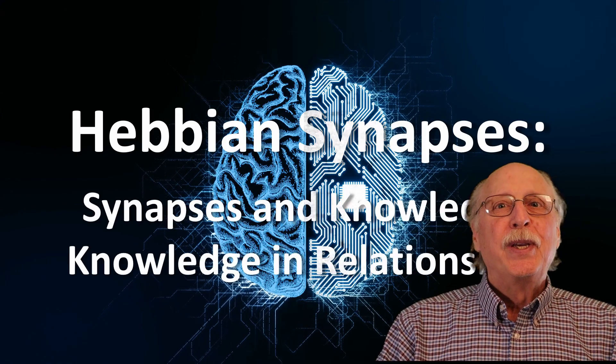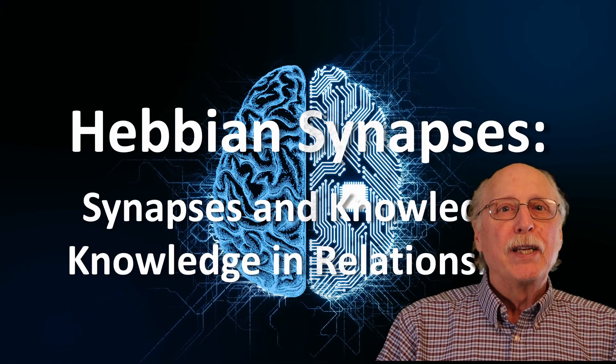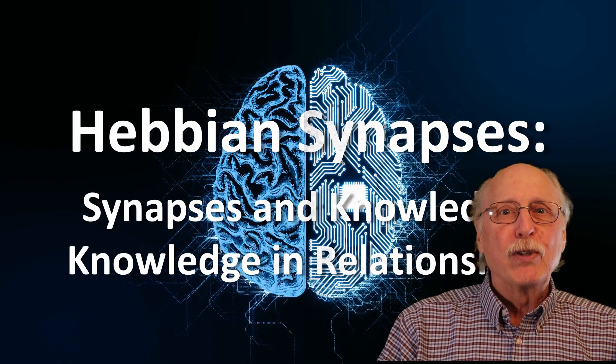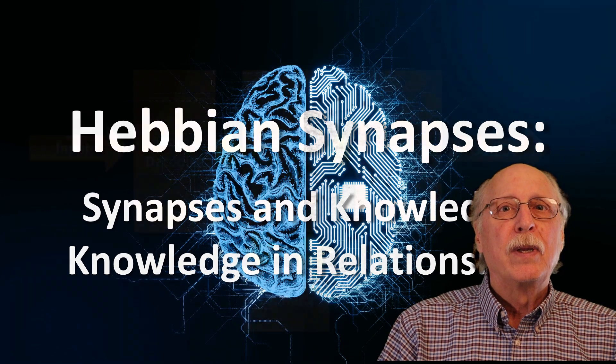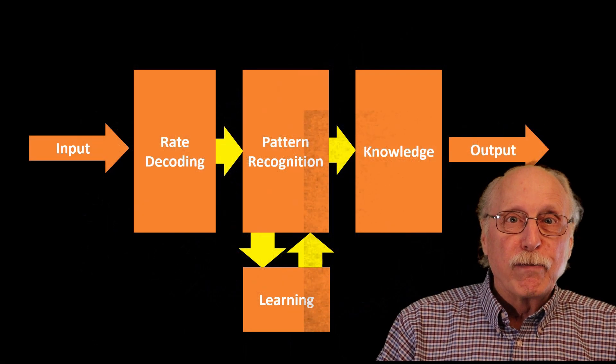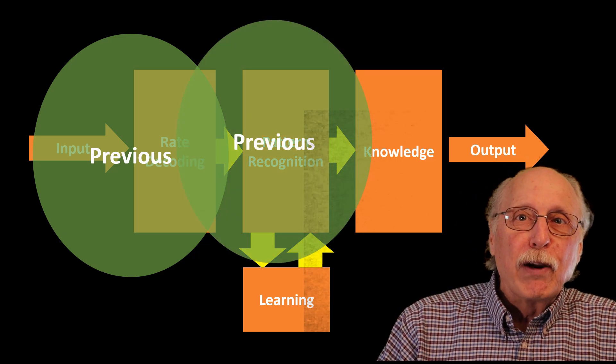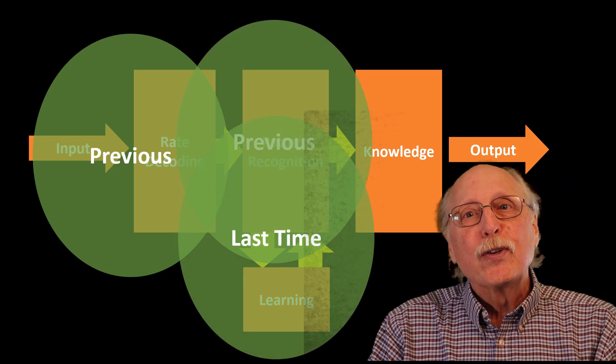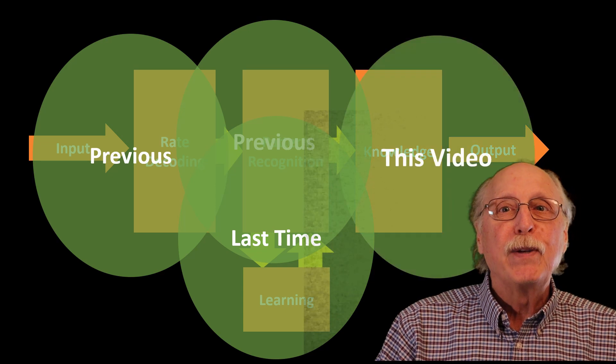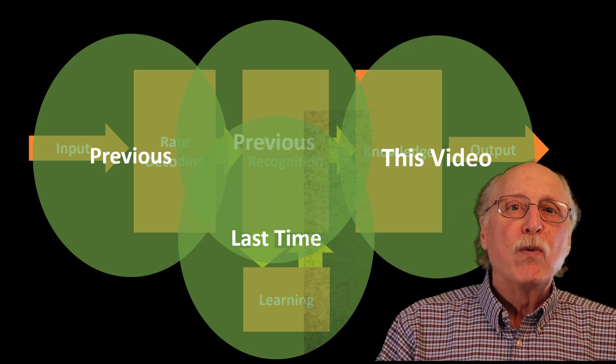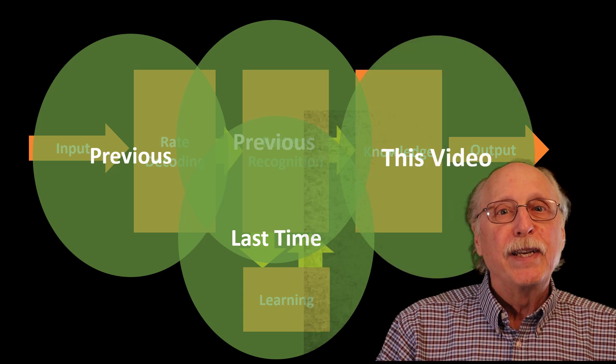Hebbian synapses, using synapses to represent knowledge and representing knowledge as relationships. This video builds on several previous videos which converted neuron firing rates to values and then learned to recognize different patterns of inputs. This video will extend these concepts to create knowledge.